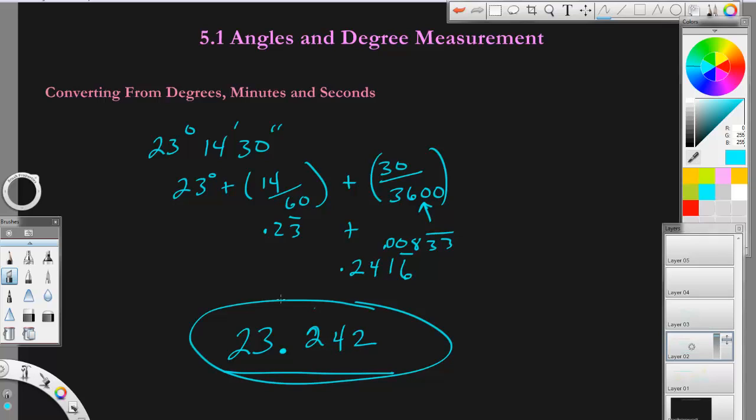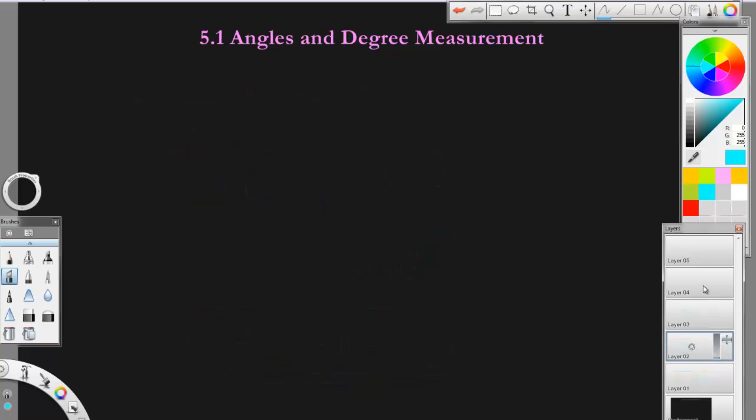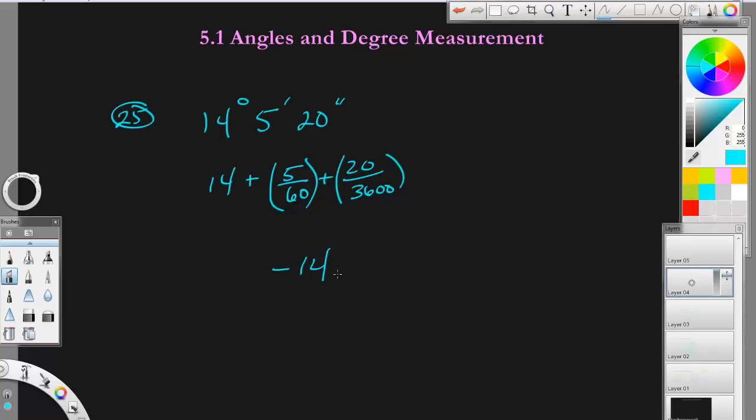Let's try another one. This is number 25 of tonight's homework. 14 degrees, 5 minutes, 20 seconds. If we have to do this, just remember, it's 14 plus 5 divided by 60 plus 20 divided by 3,600. You would just convert those fractions to decimals and add them all up. You should get something like 14.089 after you round it. Give it a try. I'll talk to you later.